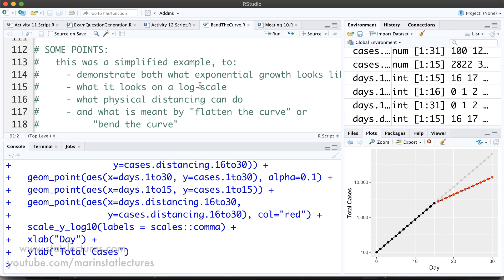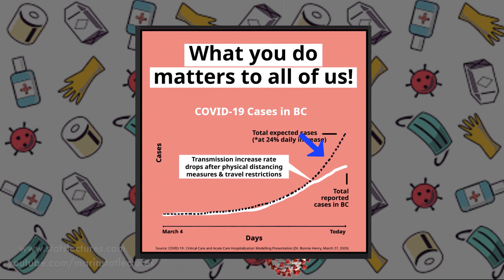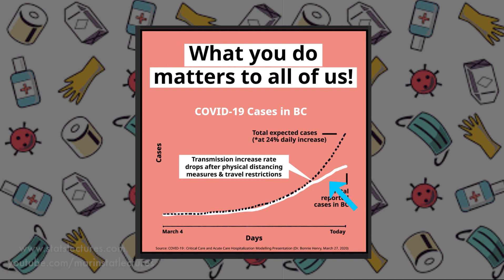In reality there's a bit of a lag between physical distancing and seeing the effect of it, but we have some evidence that this is working. Here we can see the number of cases that would be expected if cases were increasing at a rate of 24% per day — that's the black dashed line — and we can see that in British Columbia we were on this track, and then after physical distancing was implemented, the number of cases came off of that 24% increase per day trend line. We've bent the curve. We need to keep doing this for it to continue being effective, but we have some evidence that this seems to be working.